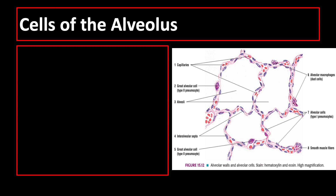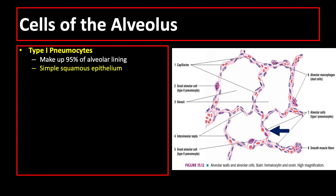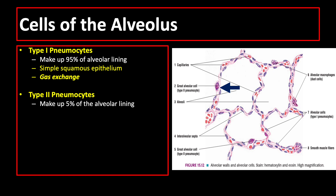An alveolus has three major cell types. First, type 1 pneumocytes make up 95% of the alveolar lining. They are simple squamous epithelium forming the alveolar side of the blood-air barrier, so thin that they facilitate rapid gas exchange. Second, type 2 pneumocytes make up 5% of the alveolar lining. They are cuboidal cells that bulge into the airspace, interspersed among type 1 pneumocytes, and primarily synthesize surfactant — a substance that prevents alveolar collapse during respiration.